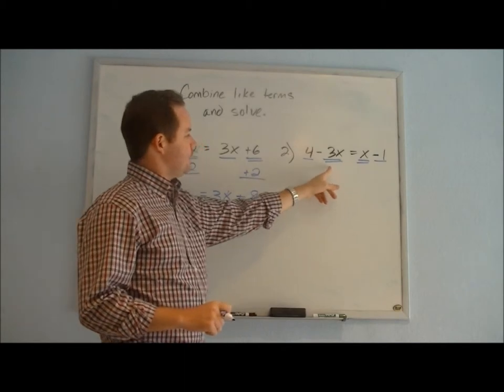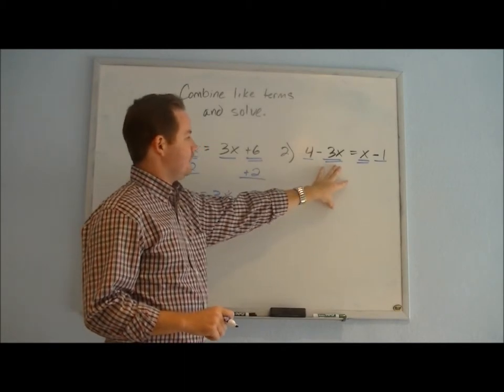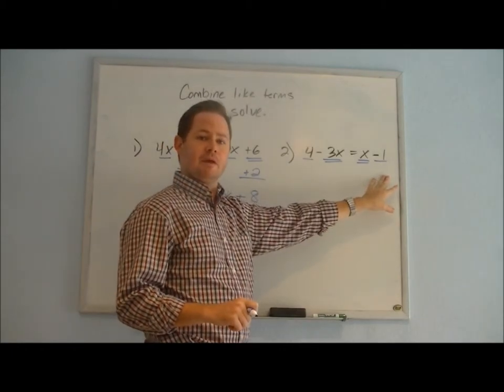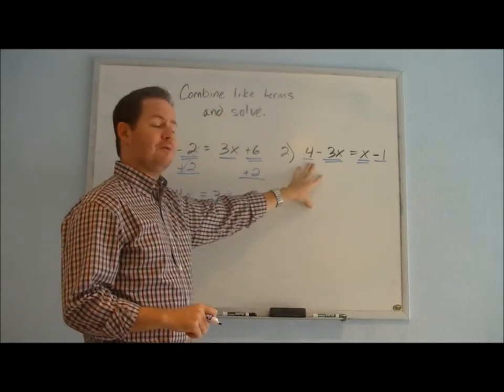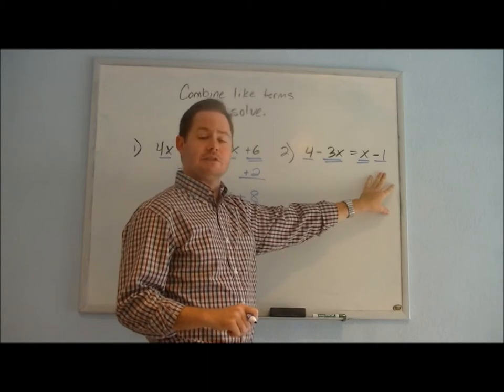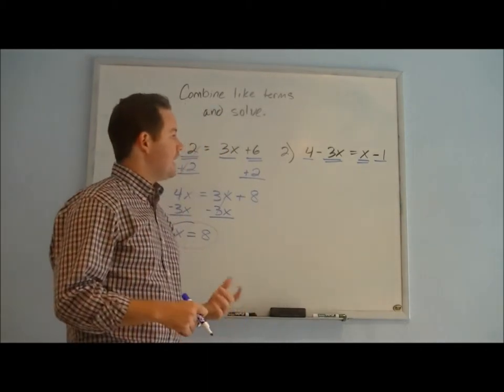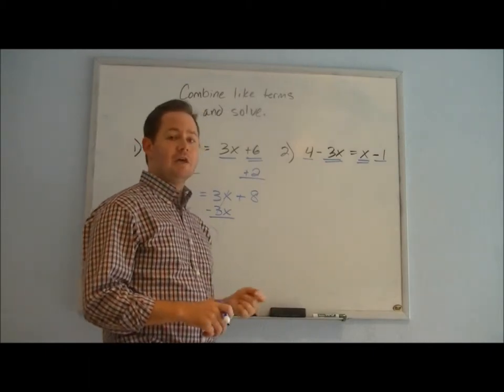We could decide that we want to leave the negative 3x on this side and move the 4 to the other side, or we could decide to leave the 4 on the left and move the 3x to the other side. And it's that second method that I'm going to display now because one thing that sometimes can help us out...